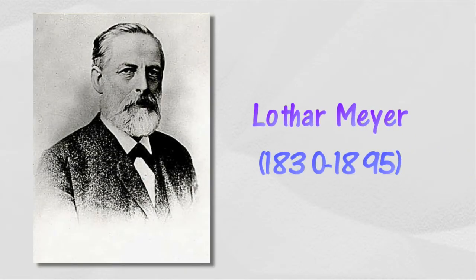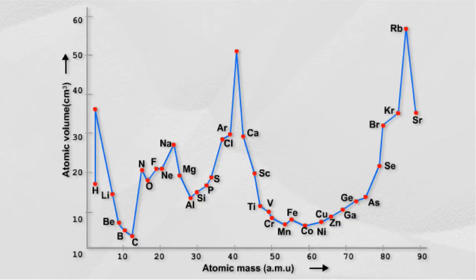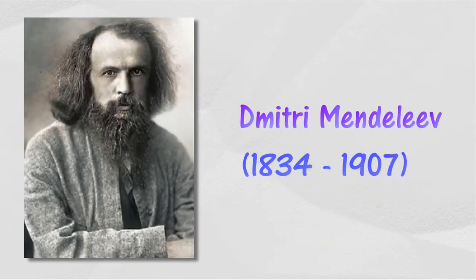Lothar Meyer arranged 56 elements into a periodic table based on physical characteristics such as atomic volume. He discovered that elements with similar chemical characteristics reside at the same level on a graph curve plotted by him, and suggested that there is a periodic relationship for elements based on their relative atomic mass.